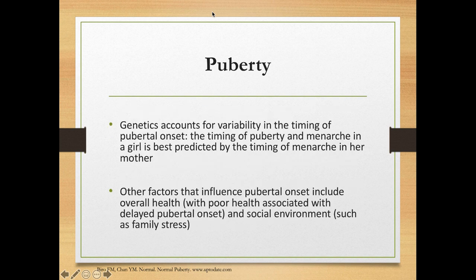Genetics accounts for variability in the timing of pubertal onset. The timing of puberty and menarche in a girl is best predicted by the timing of menarche in her mother. Other factors that influence pubertal onset include overall health — poor health is associated with delayed pubertal onset — and social environments such as family stress.